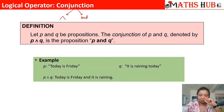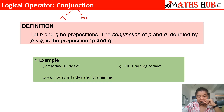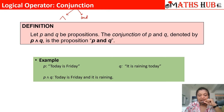Let us take an example. If proposition p is 'today is Friday' and proposition q is 'it is raining today', then connecting them with the conjunction operator gives us: 'today is Friday and it is raining.' We join the two propositions with the and operator.